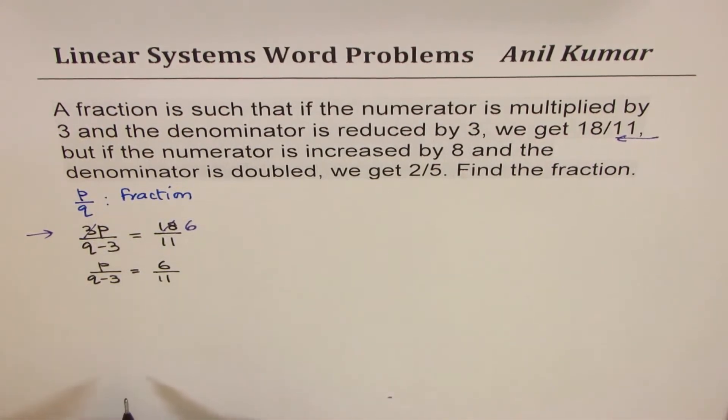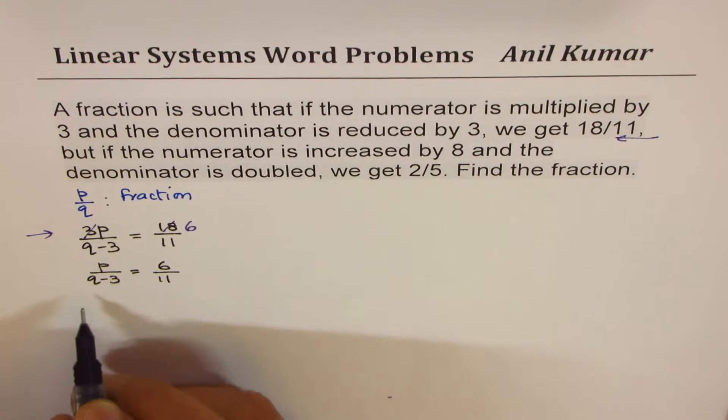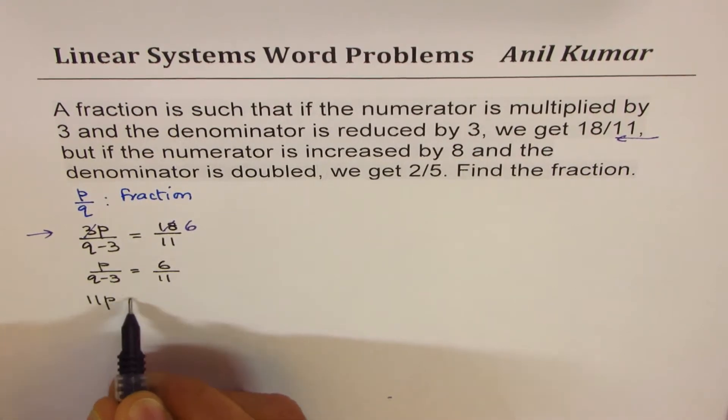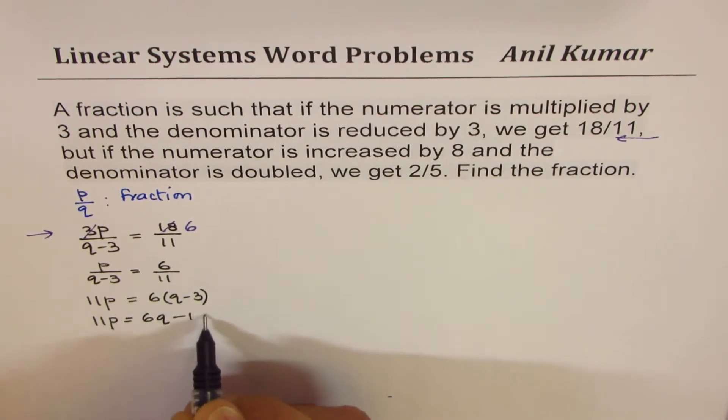Divide both sides by 3. Now we'll cross multiply. 11p is equals to 6 times q minus 3. You could actually expand it. So we get 11p equals to 6q minus 18.